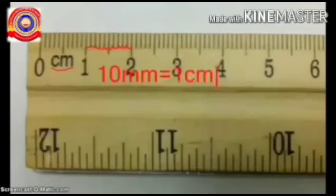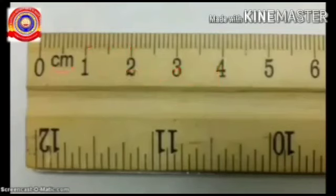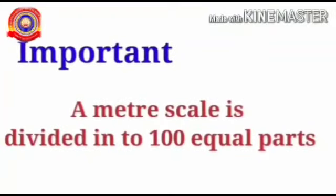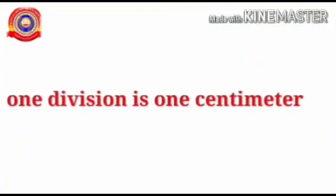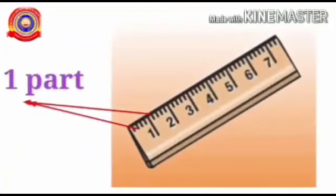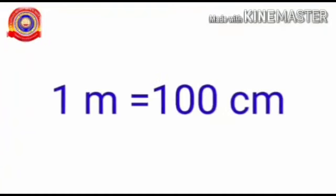When you look in between 1 and 2 on the scale, there are 10 divisions. So we can say one centimeter equals 10 millimeters. This is very important: one meter equals 100 centimeters, and one centimeter equals 10 millimeters. A meter scale is divided into 100 equal parts, and one division or one part is one centimeter.